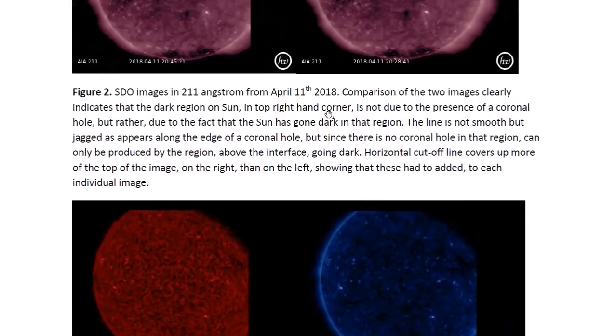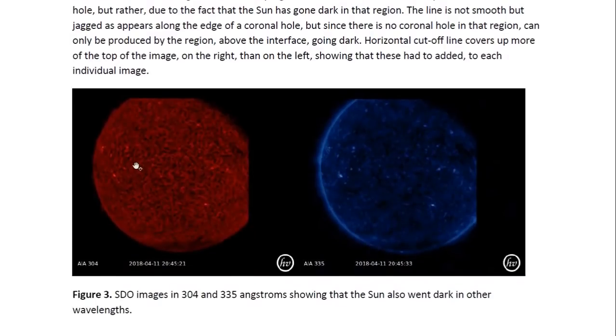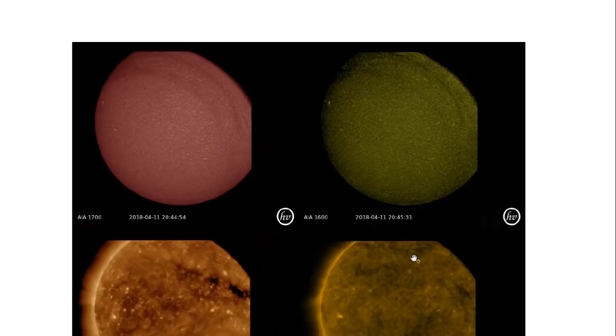And you can see that this also happens in other wavelengths. We see the 304 wavelength image here and the 335 image. The same thing occurs. We can see this jagged interface here that's indicating that the sun has gone dark on this side. You can see little portions of light still being emitted beyond this edge where darkness appears. So this is clearly a portion of the sun that has gone dark in several wavelengths.